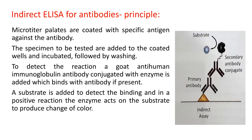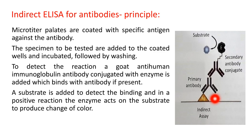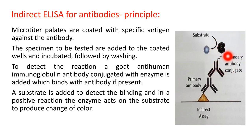In indirect ELISA for antibody detection, the microtiter plates are first coated with specific antigen. The sample containing the antibodies is added and binds with the antigen on the plate, forming an antigen-antibody complex. To detect this complex, an enzyme-labeled secondary antibody — such as goat anti-human immunoglobulin conjugated with enzyme — is added, which binds the primary antibody. A substrate is then added; in a positive reaction, the enzyme acts on the substrate to produce color.